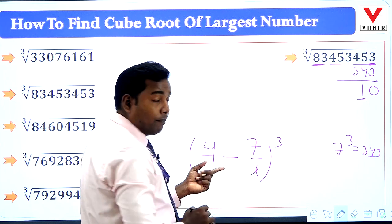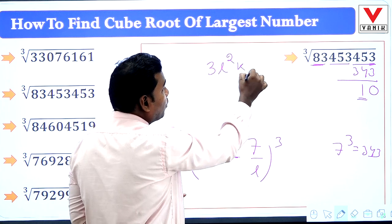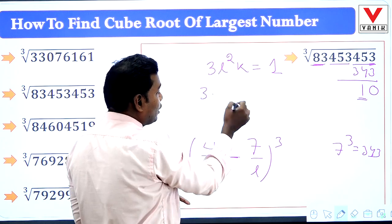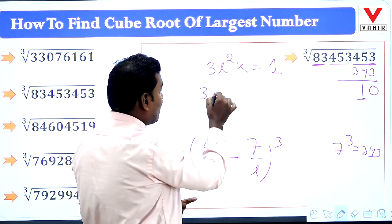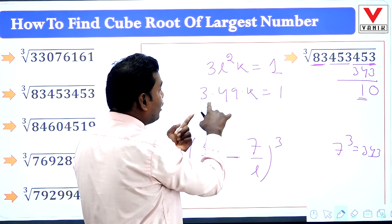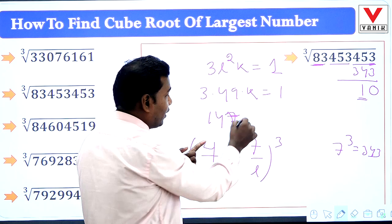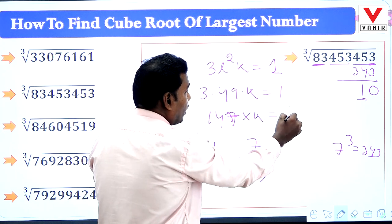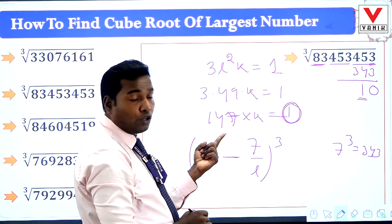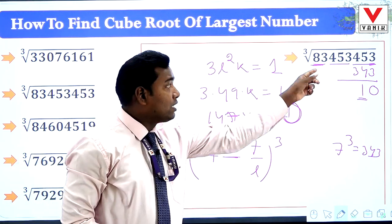Now we find the middle number using formula 3L²K. L is 7, so 3 × 49 × K = 1 (unit digit of remaining number). 147 × K gives a unit digit of 1; since 7 × 3 = 21, we take K = 3. The cube root is 437.